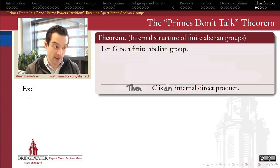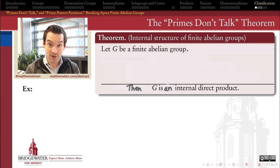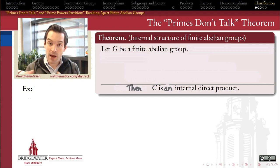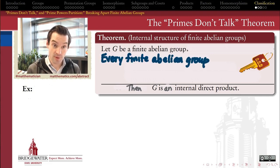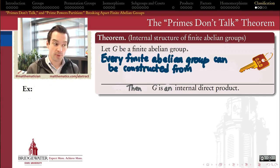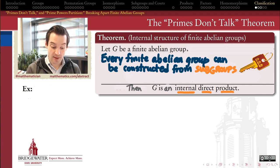Every finite abelian group has this structure in a trivial sense because every group is a times table with itself — just think of the subgroup which is the whole group. But if we can take the order of G and break it apart non-trivially into two factors, and one of those factors is a power of a prime, then this theorem tells us something really important about the structure: how that prime-power-order subgroup not only exists, but interacts with the rest of the group. This is the most important step toward the fundamental theorem, because it tells us every finite abelian group has subgroups from which it can be reconstructed.